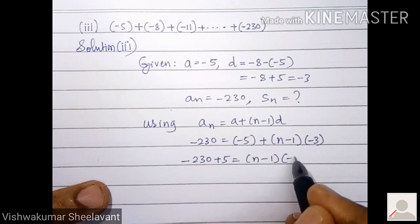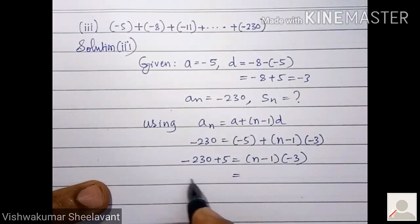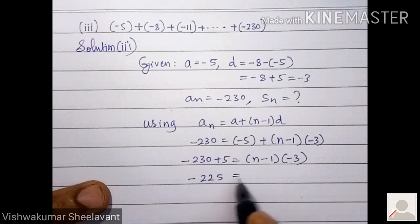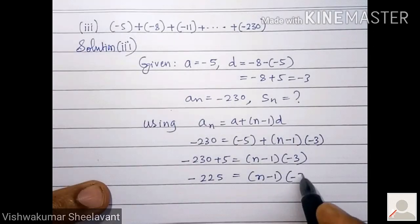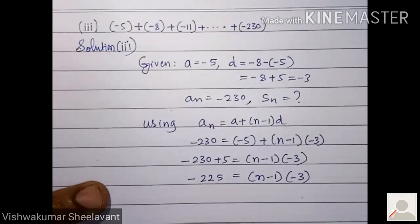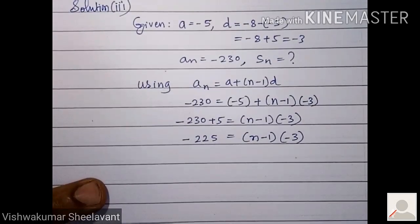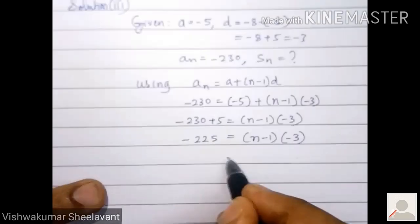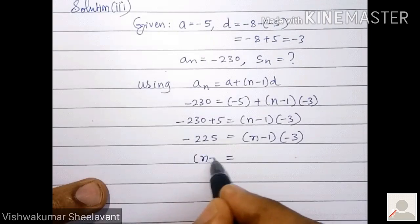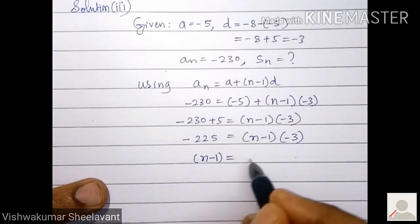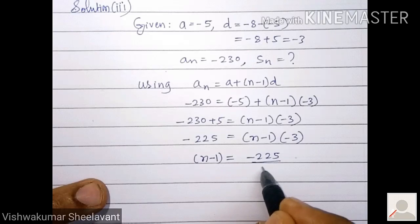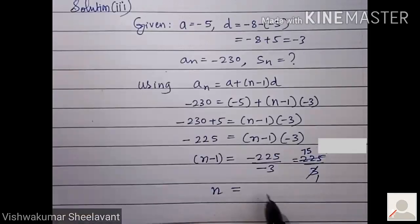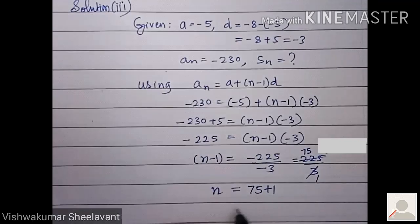-225 equals (n-1) times -3, so n-1 equals -225 divided by -3, which equals 75. Therefore n equals 75 + 1, which is equal to 76.